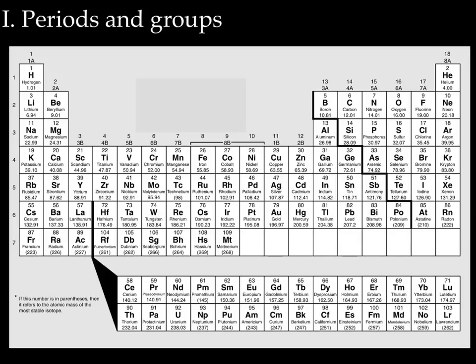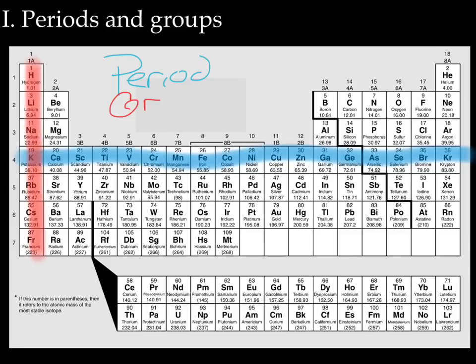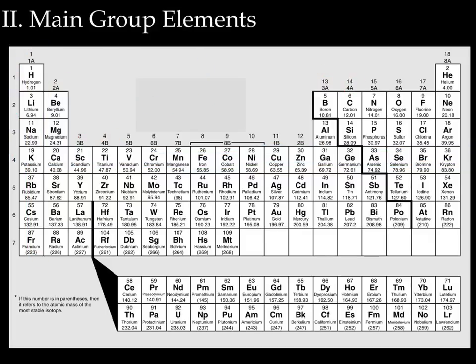We're going to start by talking about the difference between a period and a group. A period is something that goes across the periodic table. And a group goes down the periodic table. As you can see, we have period numbers: period 1, 2, 3, 4, and so forth. And we have group numbers: group 1 or 1A, 2 or 2A, 3 or 3B, 4 or 4B, and so forth. And then we have 13 or 3A, 14 or 4A, and so forth.